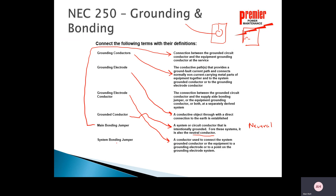The system bonding jumper is the connection between the grounded circuit conductor and the supply-side bonding jumper, or other equipment grounding conductor, or both, at a separately derived system. That's where you're actually connecting back to the service provider, like a utility, to get back to that location. So the system bonding jumper ties it all together. That's a brief overview of NEC grounding and bonding.